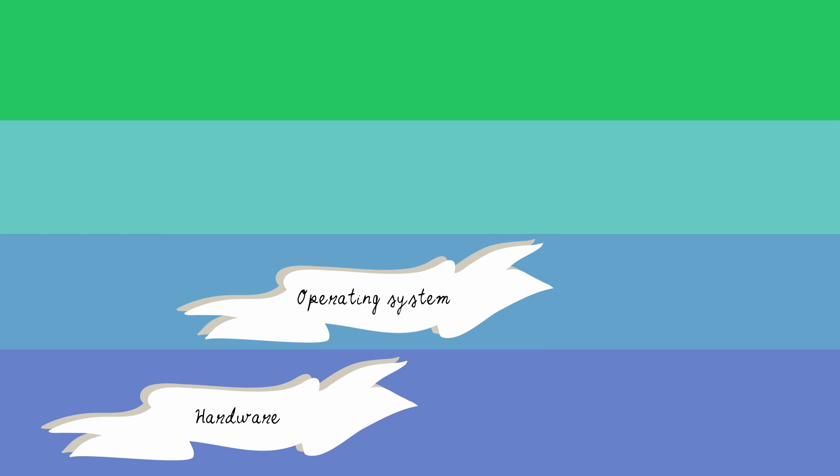First, the most core layer is the hardware. Then we have the second layer, which is the operating system. So Windows, Linux, OS X, Android, Chrome OS — all of them are operating systems. And they are your way to communicate with hardware.